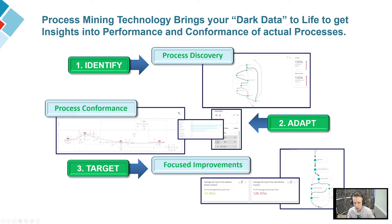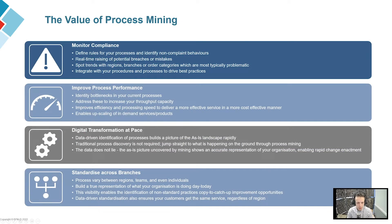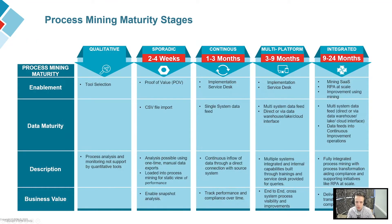Solutions like SAP Signavio's process intelligence help you to investigate the root cause of issues, and wherever you identify bottleneck and conformance issues, you can prioritize and target those as areas for focused improvements or to build detailed investigations to support a business case. This data-driven process discovery and deep dive analysis really drives your organization toward developing transparency into your as-is process landscape.